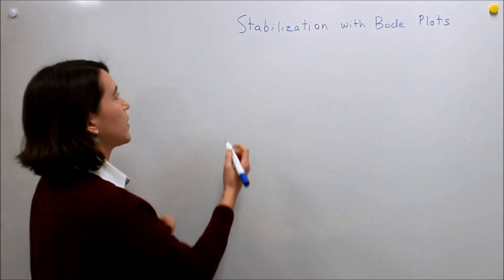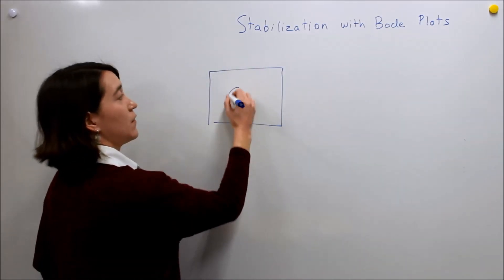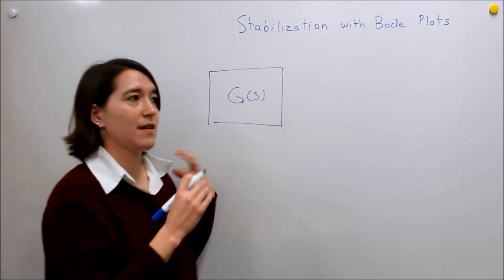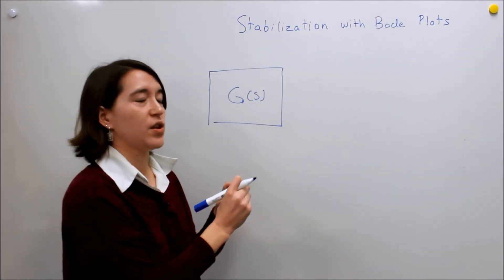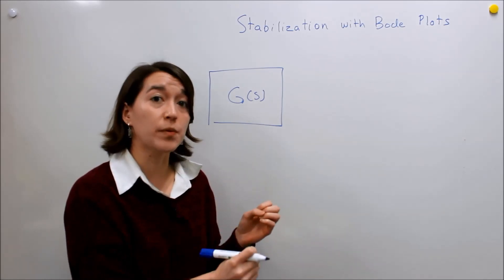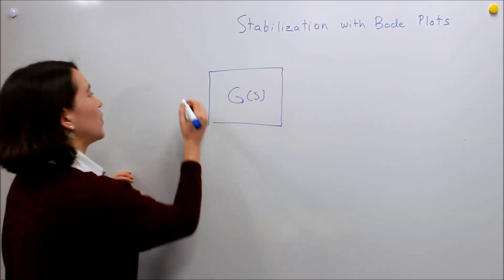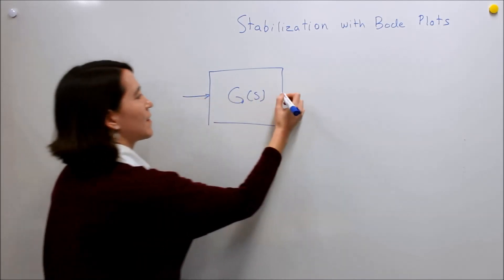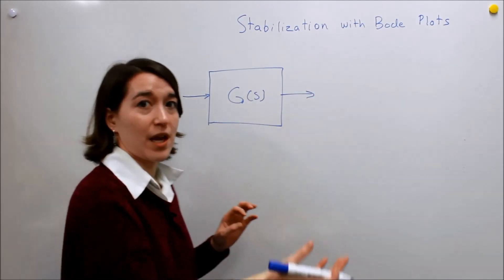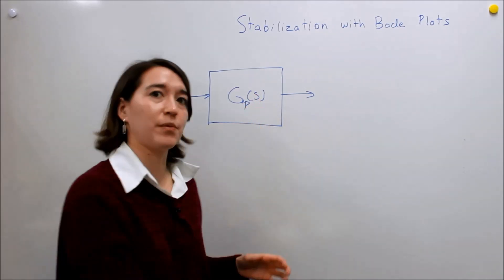The Bode plot is the frequency response of just G(s). This is a system and we're taking an open loop response. When we say the open loop frequency response, we mean just G(s) — so some plant, Gp(s), the plant system.